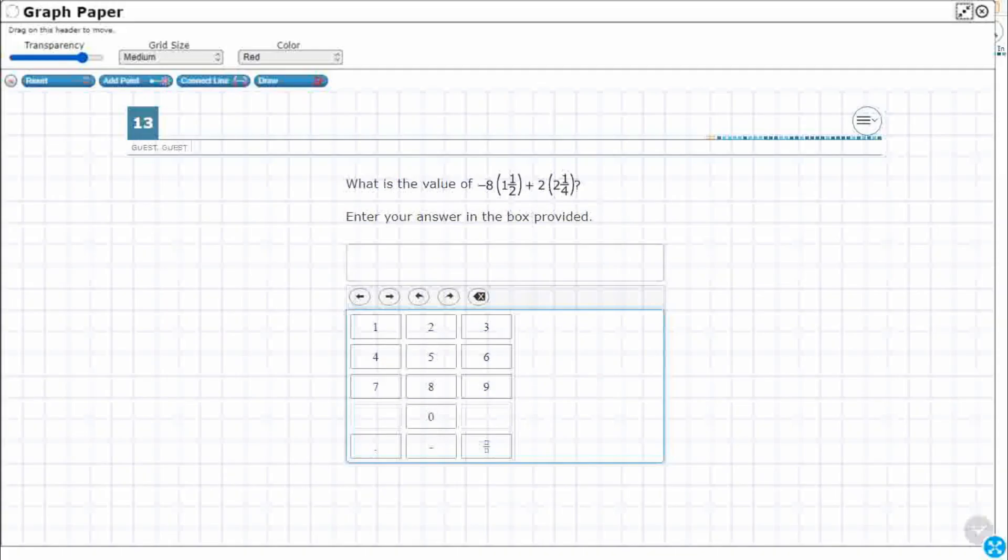All right, so we've got the value of 8, and then multiply by 1.5 plus 2 multiplied by 2.25. All right, so we need to keep in mind our order of operations.